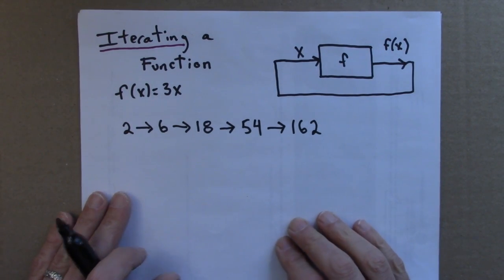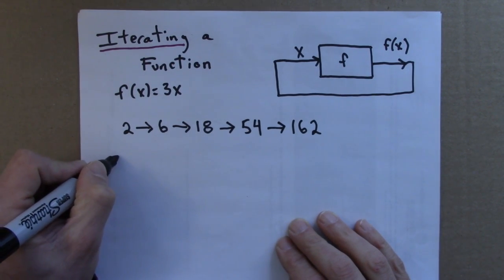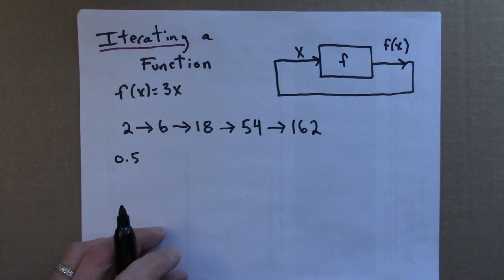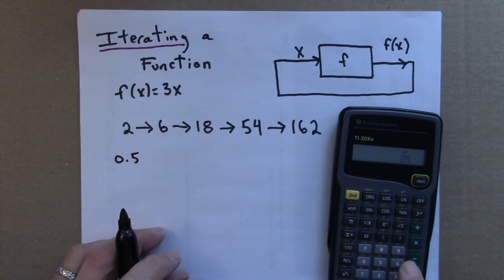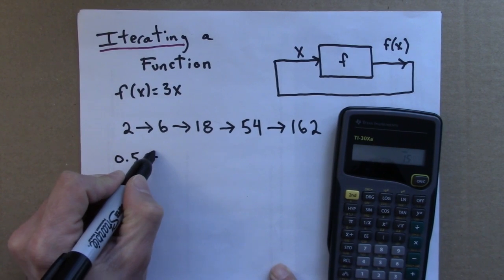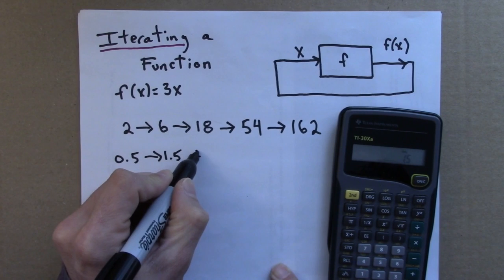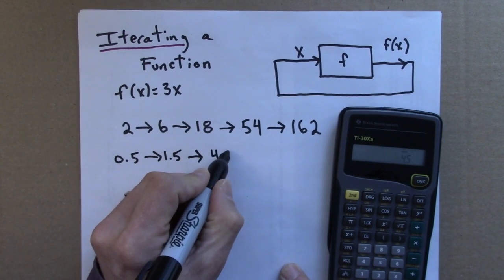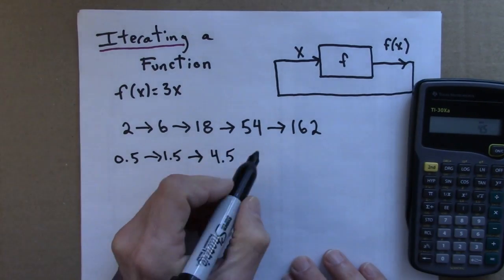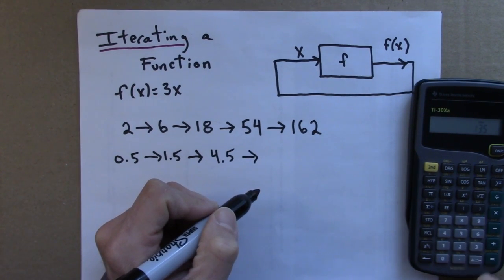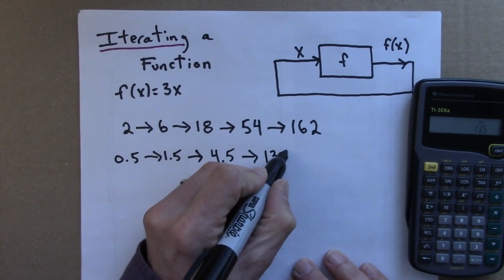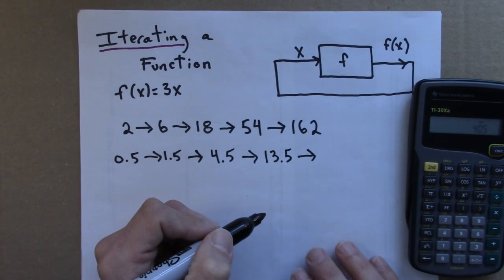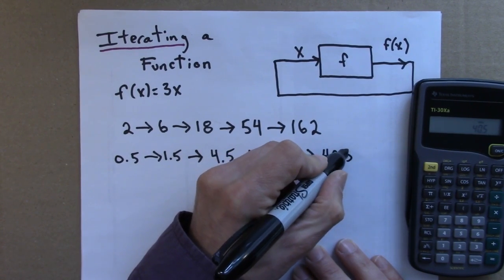Let's try one more example. Let's suppose I start with a half, 0.5. So, 0.5 would be my input. I triple that. 0.5 times 3, I get 1.5. Then I need to triple that. 1.5 times 3, 4.5. Then I would need to triple 4.5. 4.5 times 3, 13.5. Let's do one more. 13.5 times 3, that's 40.5.